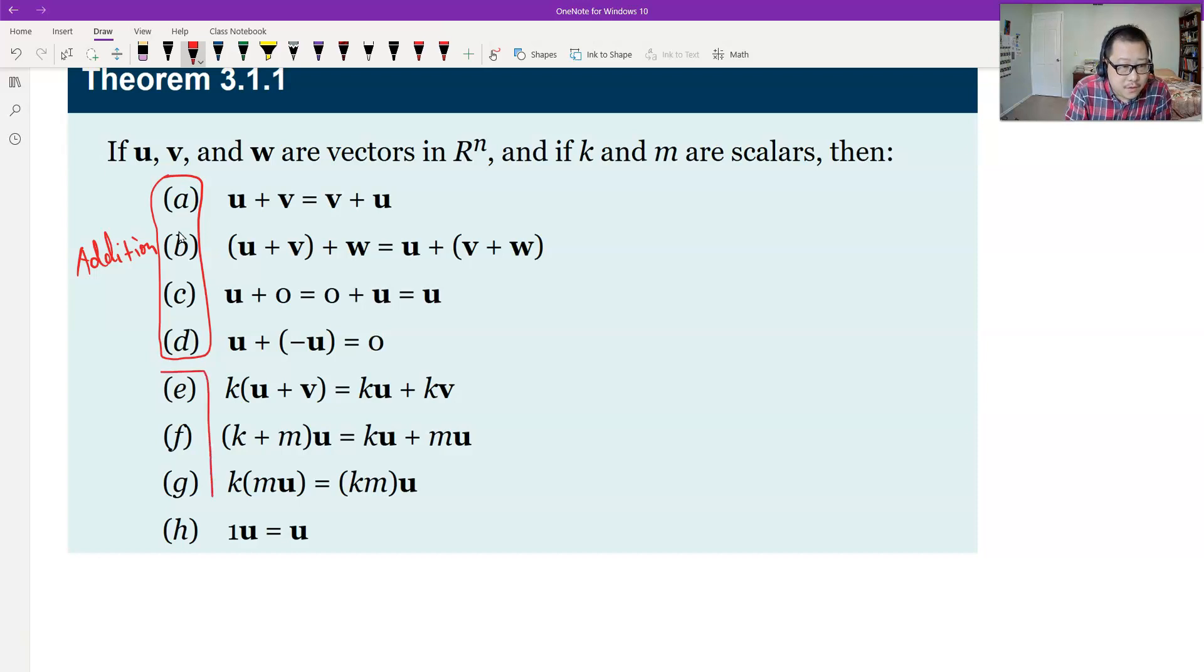And look at these four. This is talking about the scalar multiplication. Let's see how to name each property.